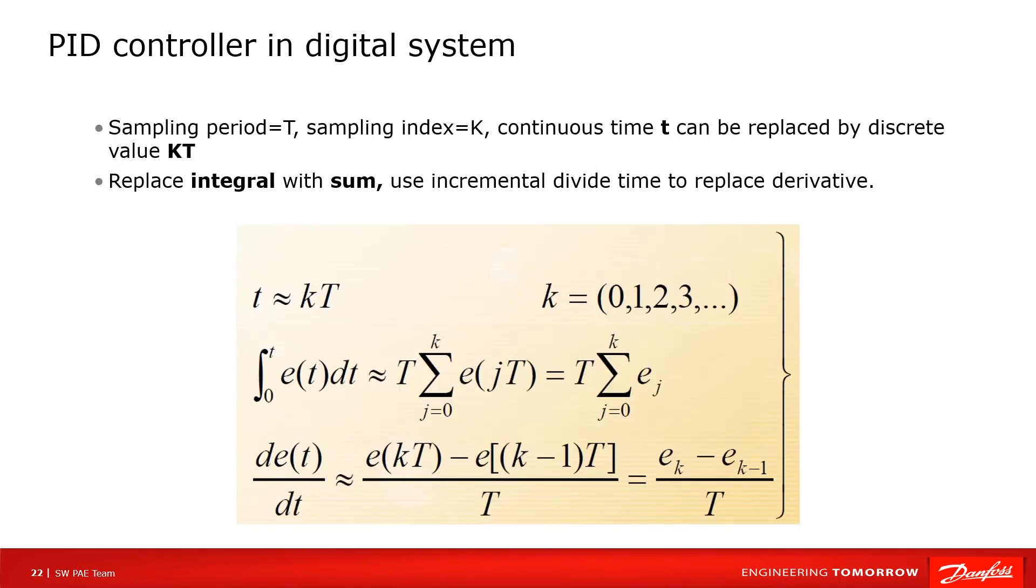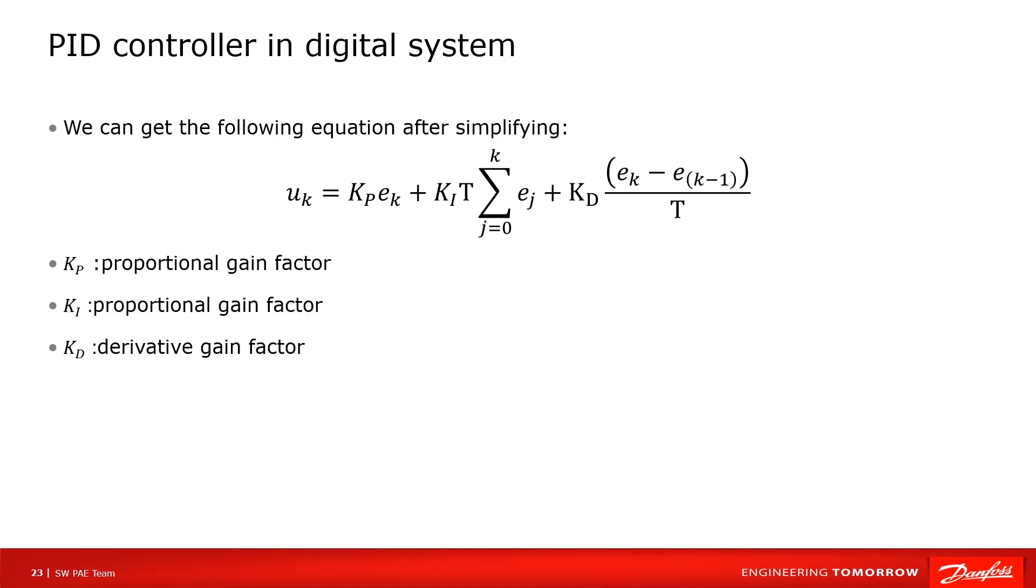Let's see how to understand PID controller in digital system. Take T as the sampling period, and k as the sampling index. So time t can be replaced by kT, then use sum to replace the integral. Use increment divide time to replace derivative. Then we can get the following equation approximately. We can get the following equation after simplifying.